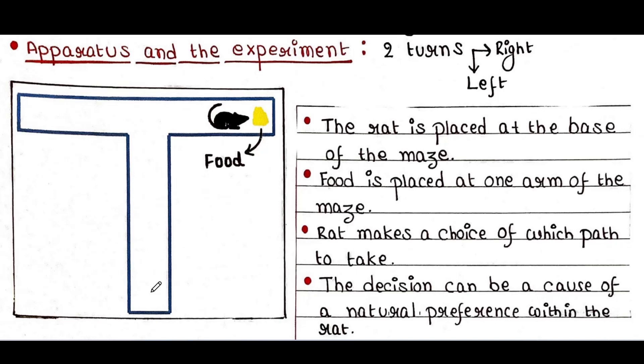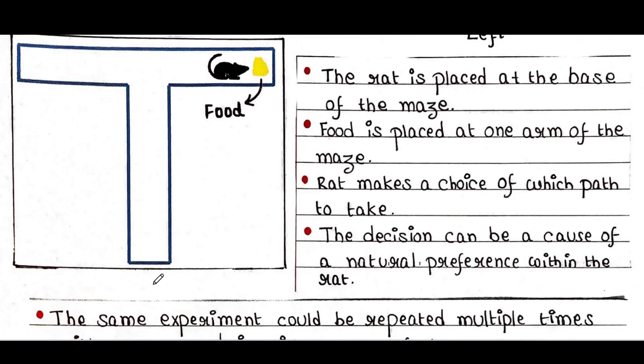If the rat has good memory, it will select the arm where food was placed.